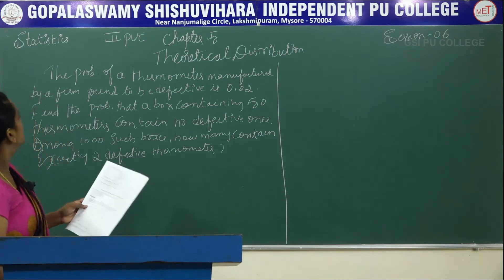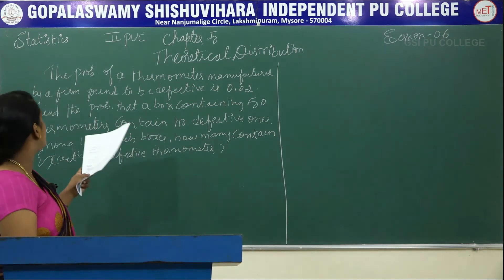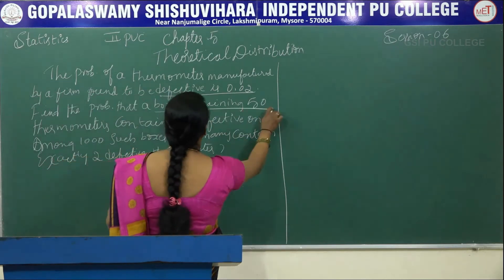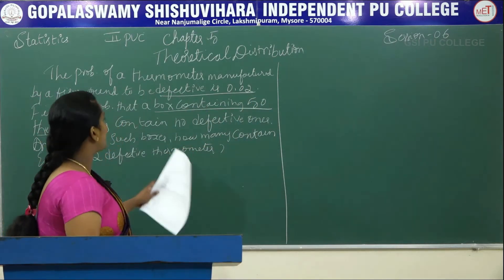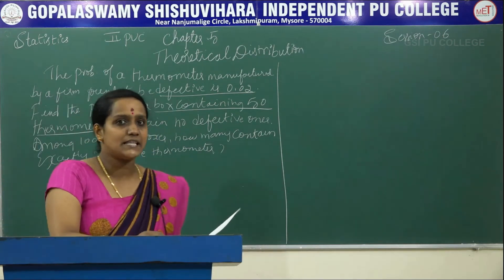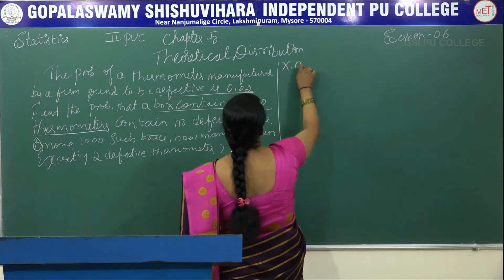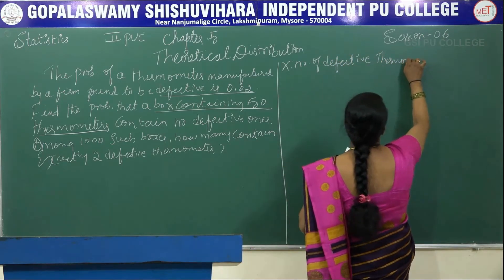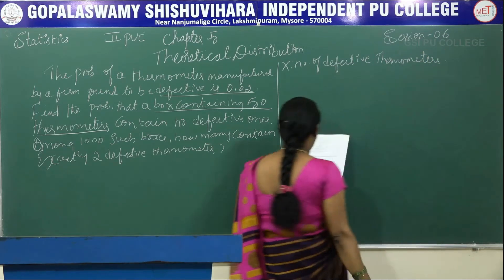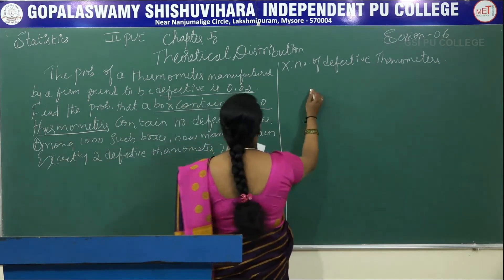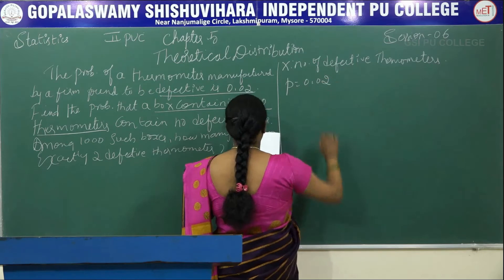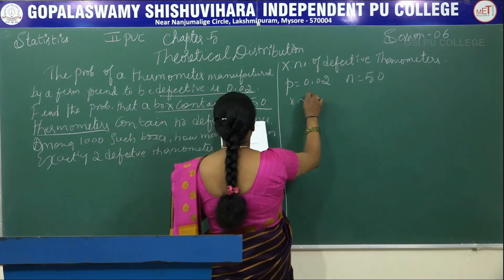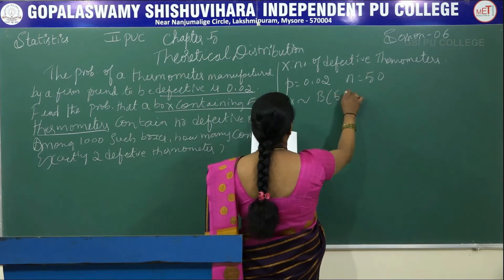Here they have given the probability of a thermometer, so X is the number of defective thermometers. The probability of defective thermometers is given, so p is equal to 0.02 and n is equal to 50. Here X follows binomial distribution with n=50 and p=0.02.